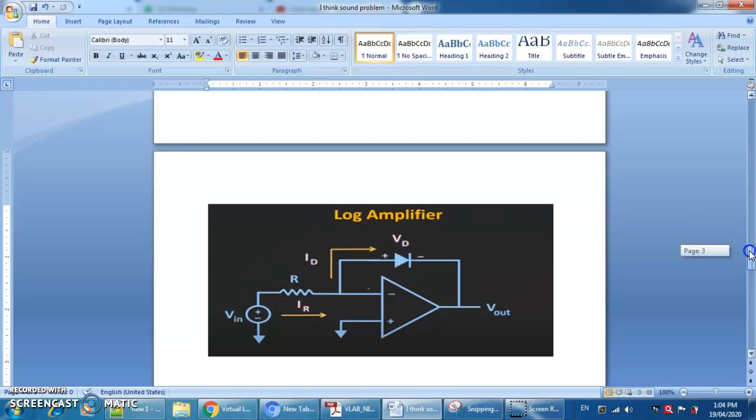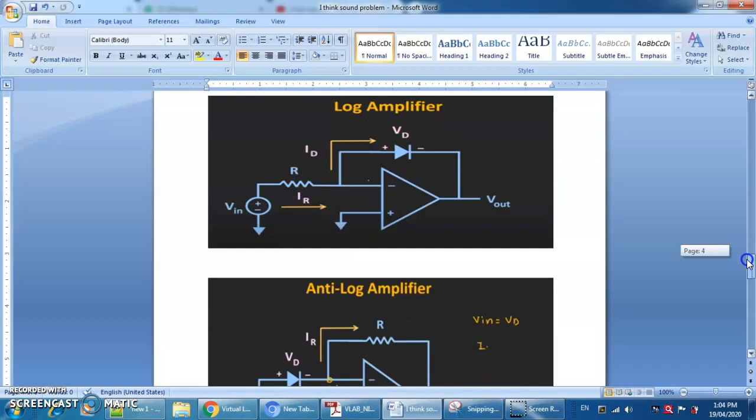In anti-log amplifier you have to just swap this diode with the resistor and resistor with the diode. You have to just exchange feedback component.